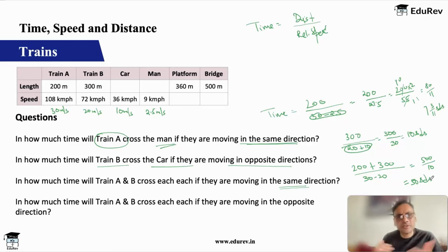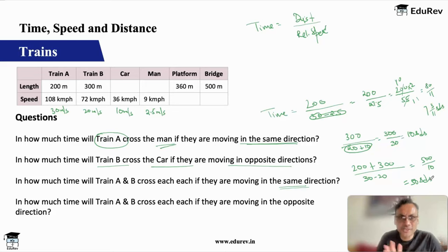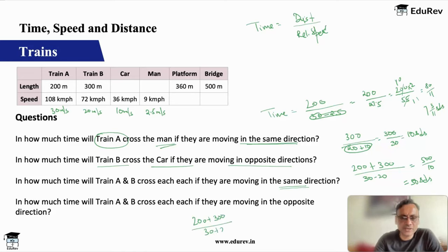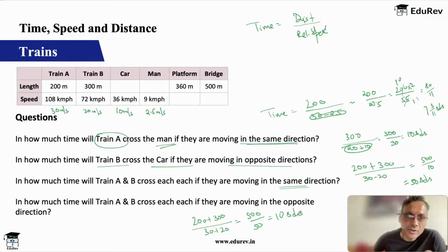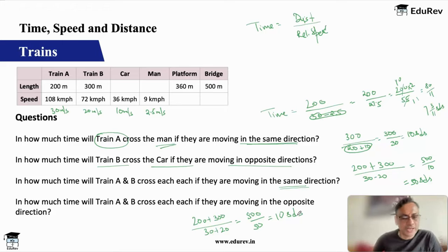For the last of this set — trains A and B crossing each other in opposite directions: distance is again 200 + 300 = 500 meters. Opposite direction, so we add: 30 + 20 = 50 m/s. Time = 500 ÷ 50 = 10 seconds. They cross each other in just 10 seconds. So we have now covered all variations: point stationary object, point moving object, length stationary object, and length moving object — two questions on each.